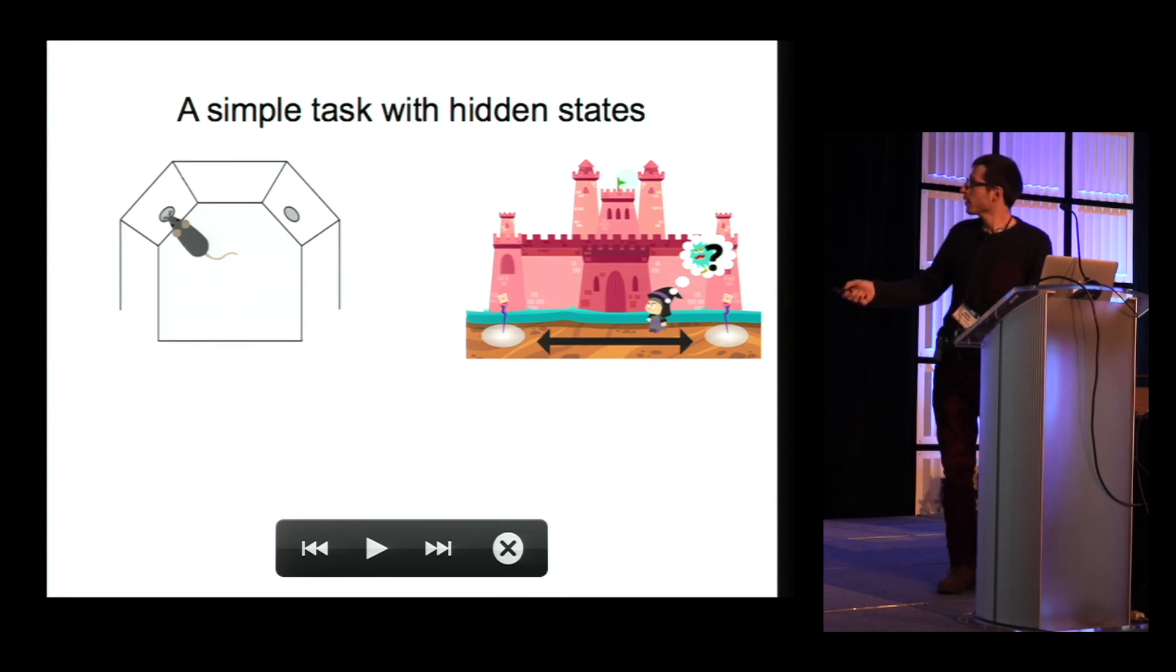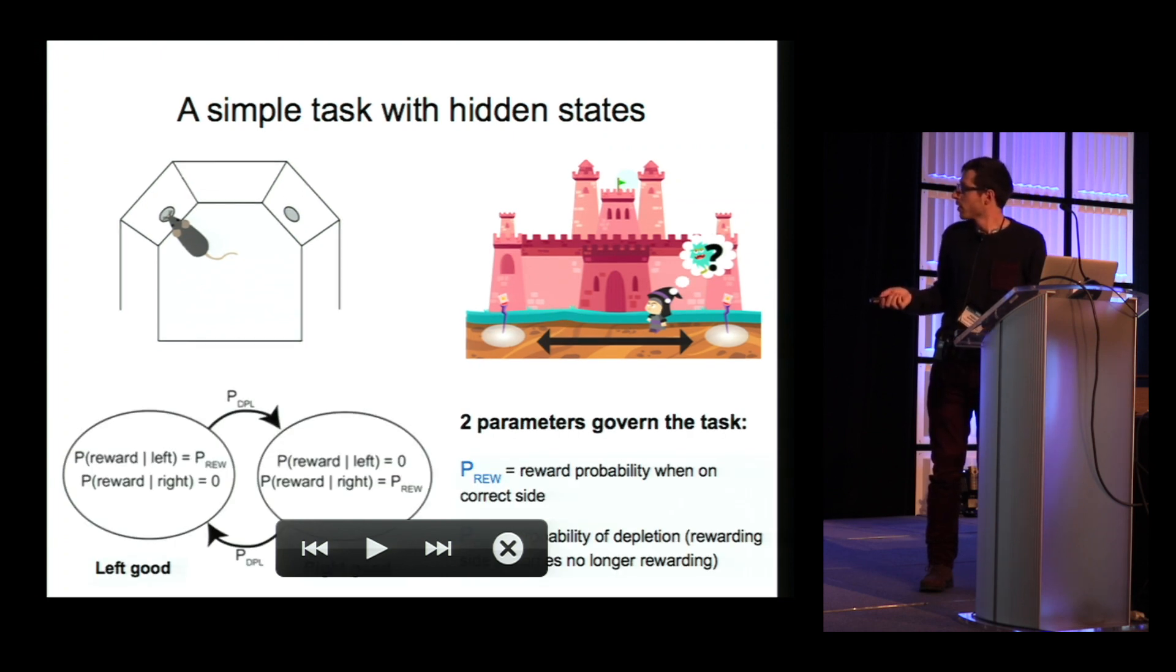So, this is what the task looks like. On this side, you have the mouse version, which is a behavioral box with two pokes, one on the left and one on the right. And the animal has to figure out which side is giving water. And here you have the human version. It's a video game with a castle. And the player has to figure out behind which side of the castle a monster is hiding. Not to discriminate between mice and humans, from now on I'll use the species-neutral term attempt to refer to a nose-poke for the mice and to a tap on the screen, which is the human equivalent.